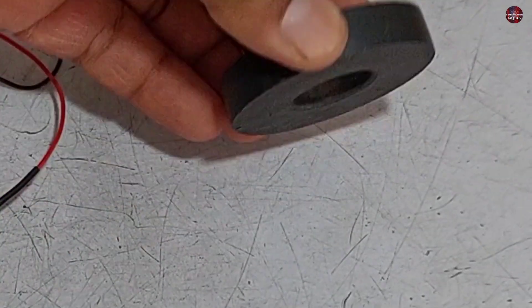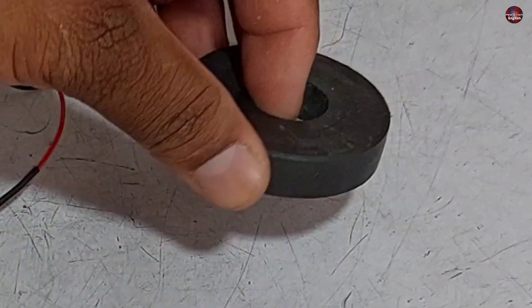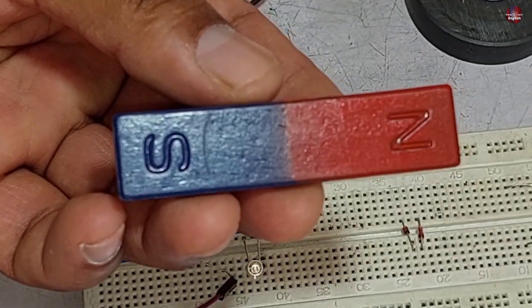Now I need a magnet. I have two kinds of magnets with me right now. This is a ring magnet, and I don't know about its polarity. This is the bar magnet with the north and south poles written on it.